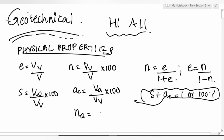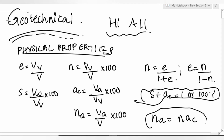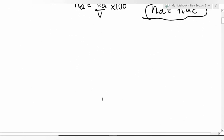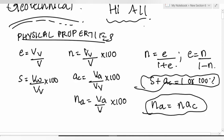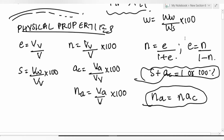Percentage of air content equals volume of air divided by total volume, multiplied by 100. The relationship is: percentage air content = n × ac. Water content equals weight of water divided by weight of solids, multiplied by 100.